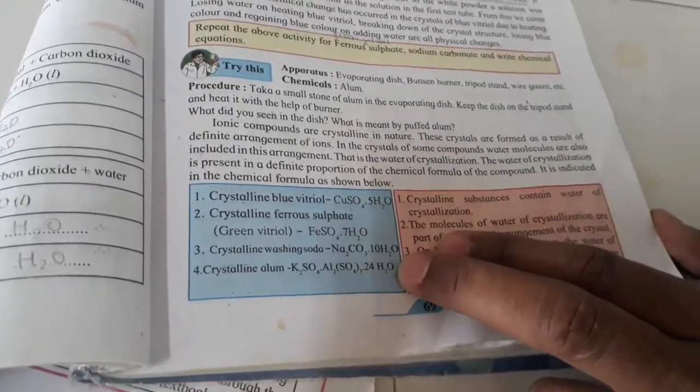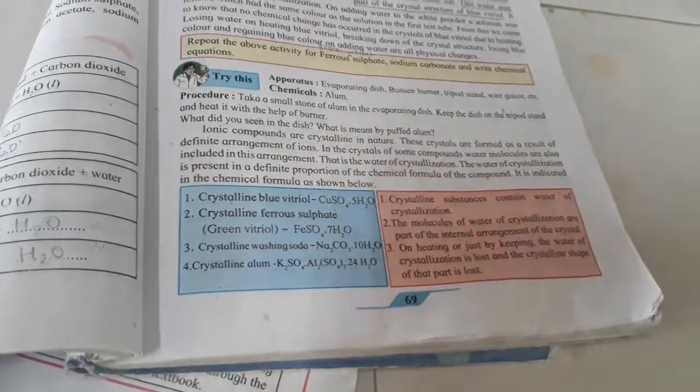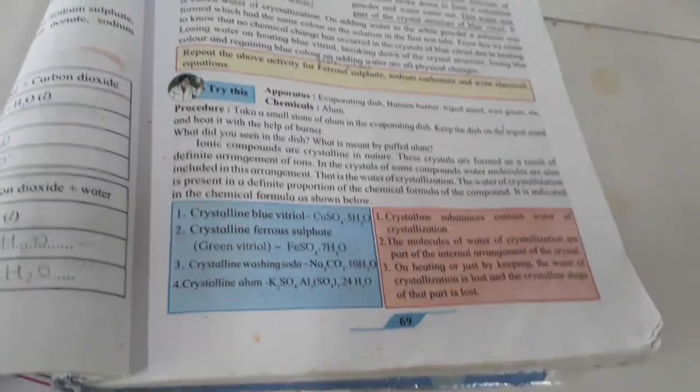24 molecules of water are present in this, meaning compared to other substances, alum is containing more water of crystallization.